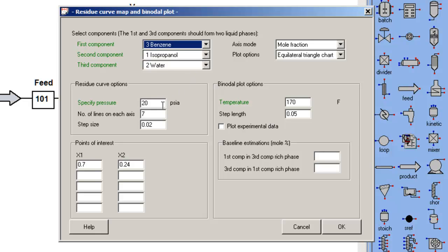I've been doing my calculations of phase behavior at 20 psi, so I put that in for the residue curve. I want seven lines on each axis to allow me to better understand how a distillation might proceed. I'm particularly interested in the region near this benzene isopropanol azotrope.